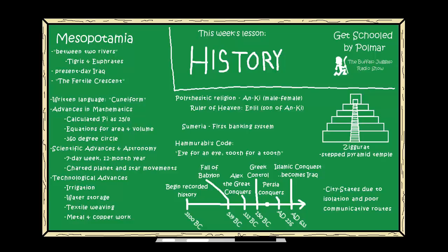Besides having one of the earliest forms of written language, they made many advancements in math and science. As far as math goes, they worked with a base-60 system. That's where our 60-minute hours, our 24-hour day, and the 360-degree circle all come from.